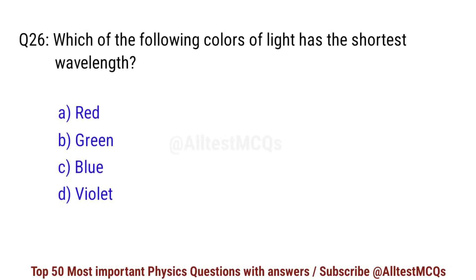Question number 26. Which of the following colors of light has the shortest wavelength? Correct option is D. Violet.